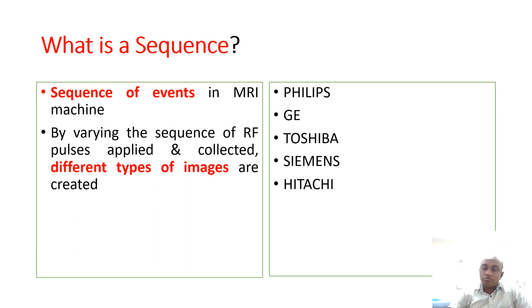There are many companies such as Philips, GE, Toshiba, Siemens, and Hitachi. Mostly T1 sequence, T2 sequence, and FLAIR sequence are names common to all, but other sequences have different names from company to company.